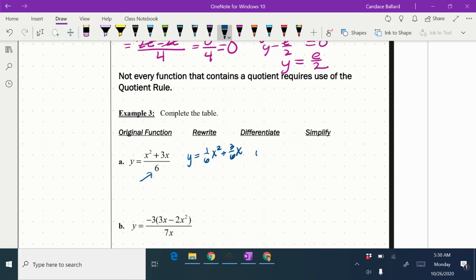And then when I go ahead and take that derivative, remember my 2 goes in front, so I would end up with 2/6 x plus 3/6. And then when I go to simplify that, it would be 1/3 x plus 1/2.